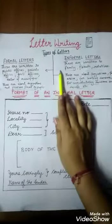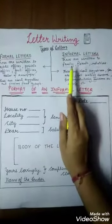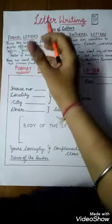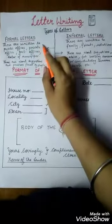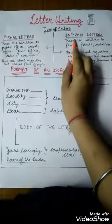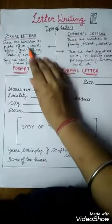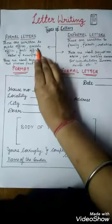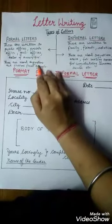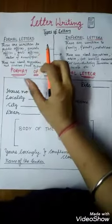We all know what letter writing is, so let's talk about the types of letters. There are two types of letters that we often write or send. First is formal letters and second is informal letters. Formal letters are those letters that are often written to public offices, private offices or government offices. These are often about suggestions or problems faced by the people.